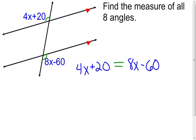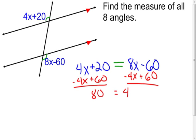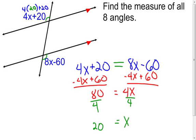I'll add 60 to both sides to work with positive numbers, then subtract 4x from both sides. My equation becomes 80 equals 4x. Dividing both sides by 4, I find out that x is 20. Now I plug it in — taking 4 times 20 and adding 20 gives me a 100 degree angle. So the measure of the top left angle is 100 degrees.